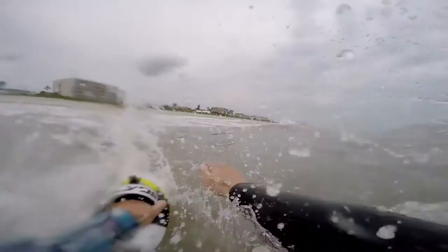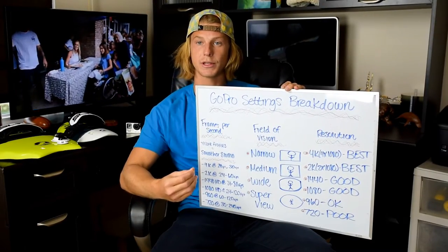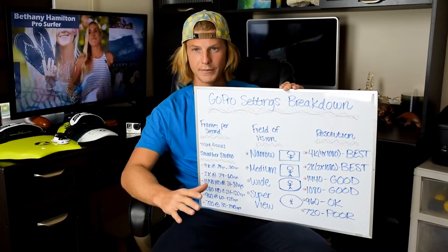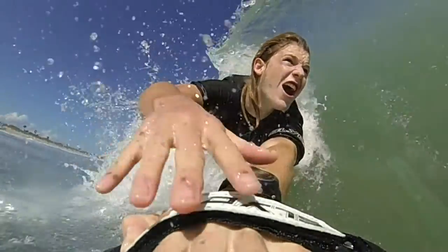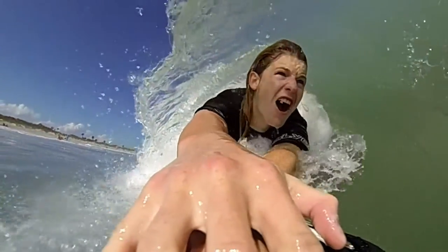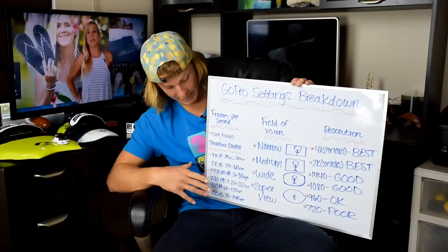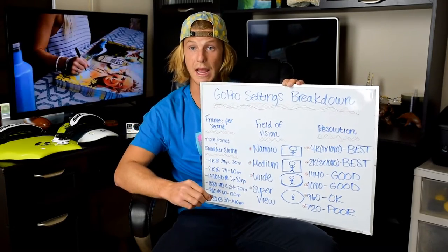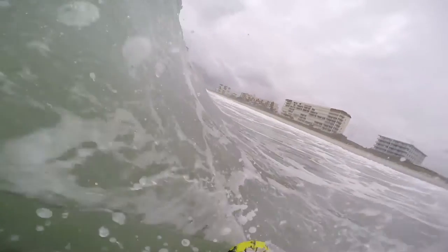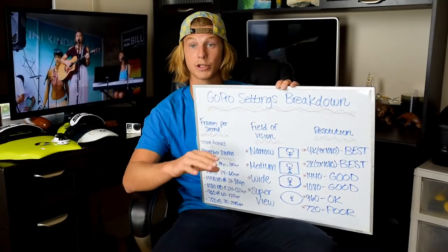Now that we've broken down all three, it's important to understand how they correlate together. For example, if I want to shoot a super slow motion shot as slow as I can go, my option would be 720p up to 240 frames per second. But for most purposes, the best option for slow motion is 1080 at 120 frames per second — it's wide angle, high resolution HD, and 120fps gives you awesome slow motion.